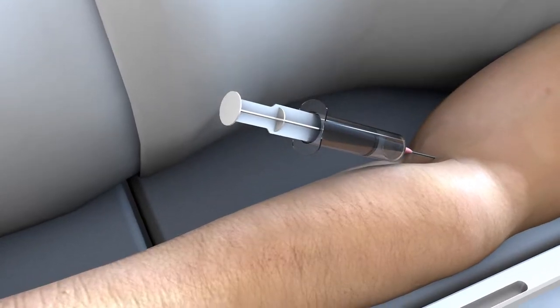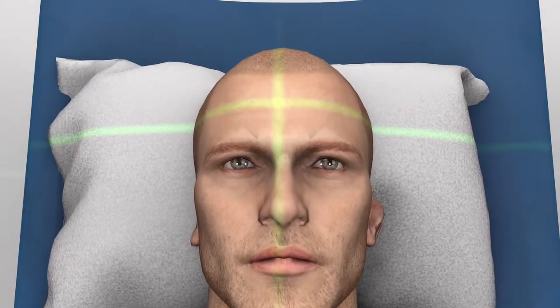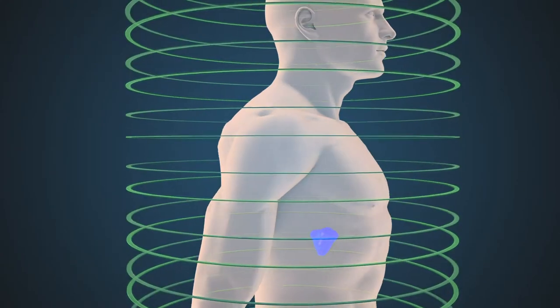By injecting glucose, which is replaced with some short-lived isotopes, into the body, a three-dimensional CT scan can easily detect small cancer tissues that cannot be detected by MRI.